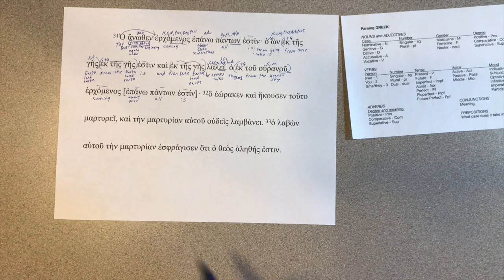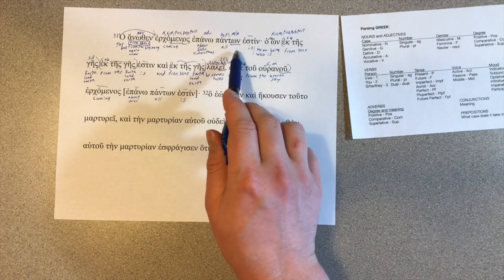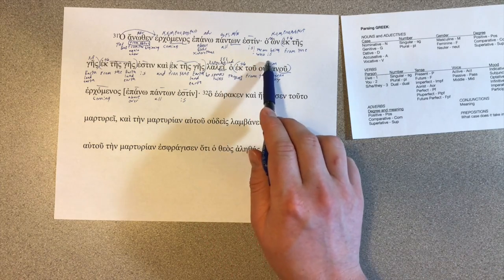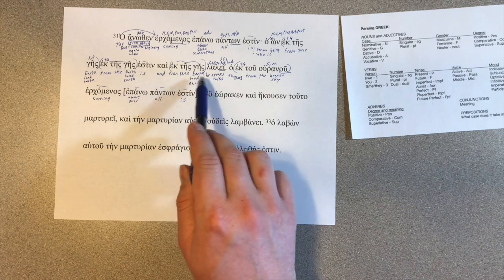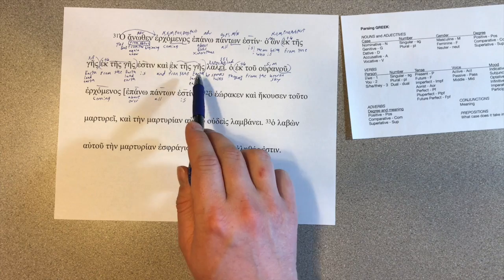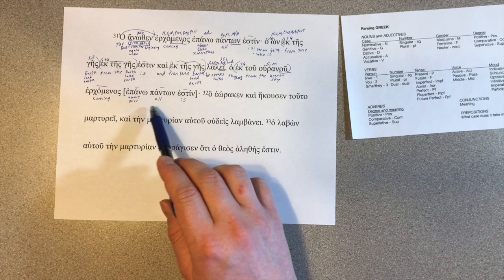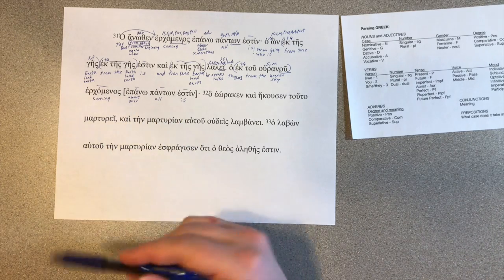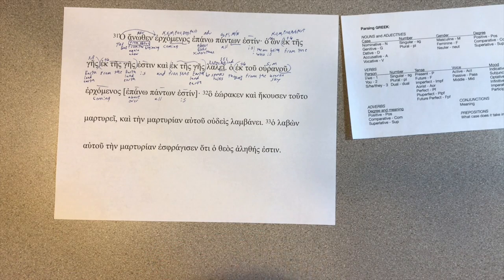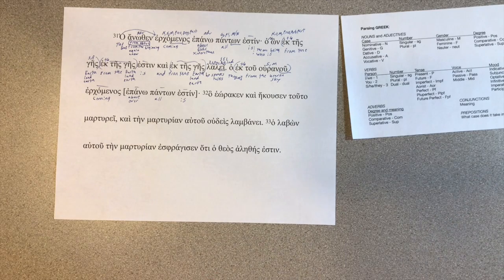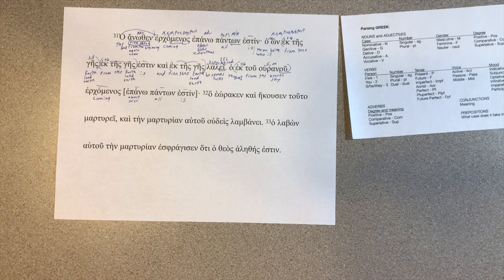The one coming from above, above or over all is, is above or over all. Who is from the earth is from the earth, no doubt. And he speaks from the earth. The one coming from the heaven is over all, is above all. And I think again the idea would be has authority over, or could be is better than all, maybe? I don't know. That might be reading a bit much into it. Well there you go. This is verse 31 of chapter 3, starting off our final paragraph.